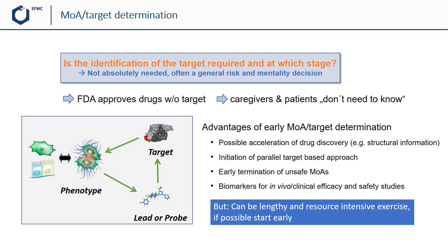But there are other reasons and advantages why target deconvolution and a detailed understanding of drug action are beneficial. With knowledge of the molecular target, there are options in modern drug discovery to accelerate lead optimization programs, for example through the use of structural information. In parallel, a target-based program can be launched to generate additional starting points for optimization. A better understanding of the pathway also helps de-risking and to exclude potential unsafe mechanisms of action. Lastly, with knowledge about the target of a phenotypic drug, it is easier to translate from a preclinical to clinical setting enabled by proper biomarker development.